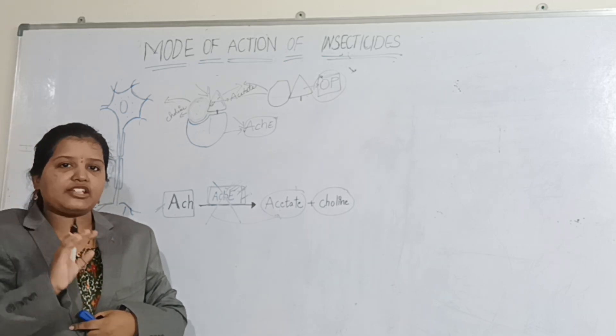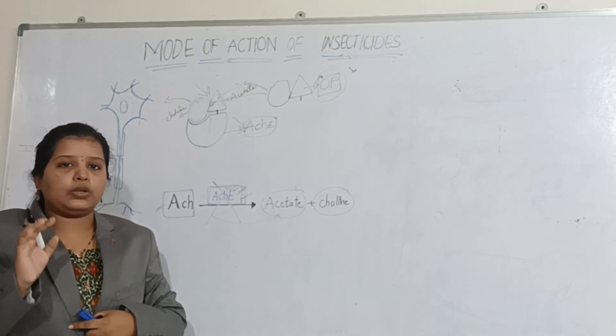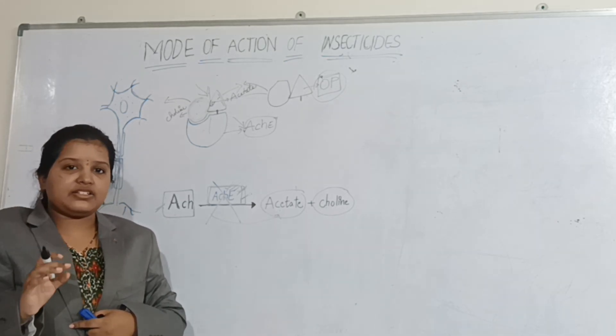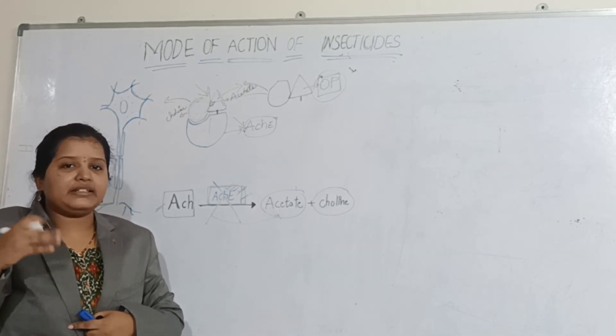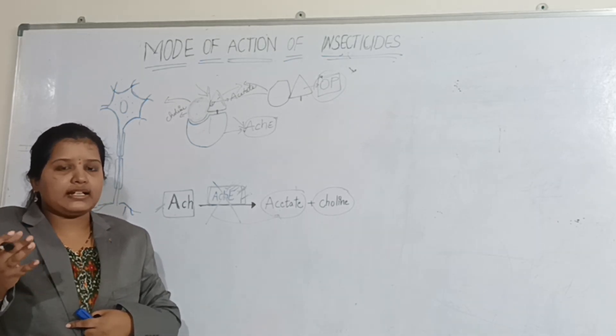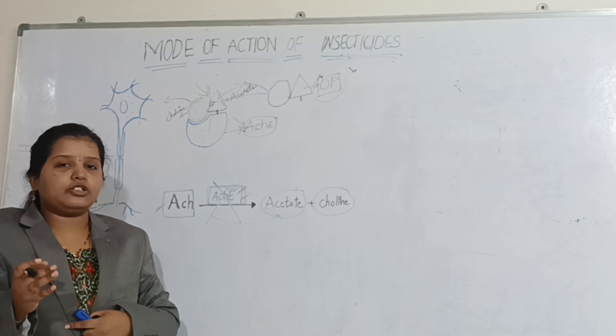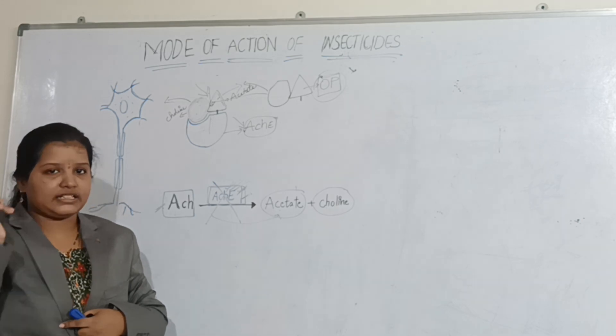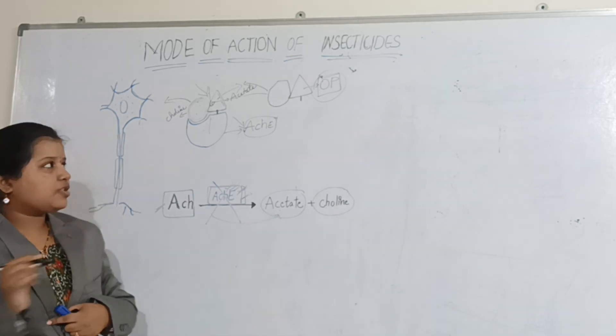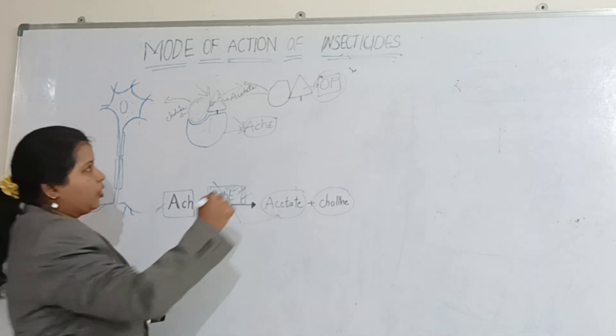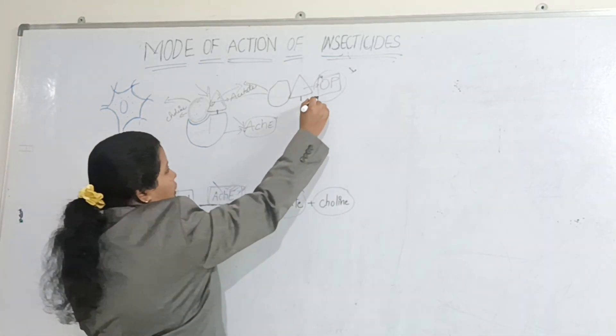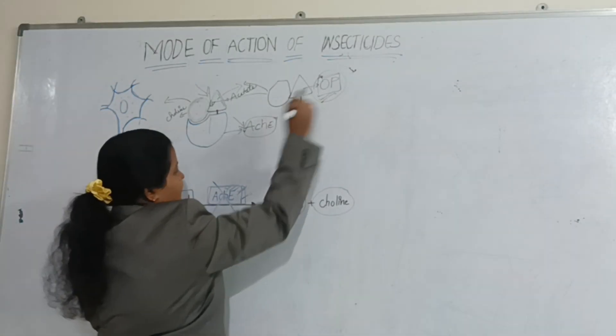As a result, there will be accumulation of natural acetylcholine messengers on the receptors of the other neurons, and the insect will die. This is the mode of action of organophosphate insecticide.